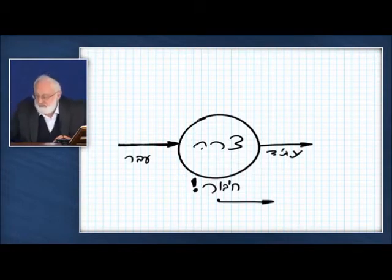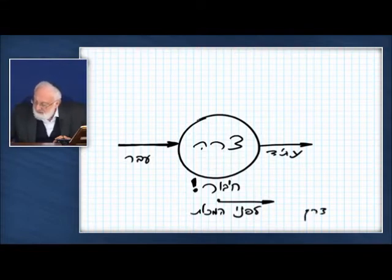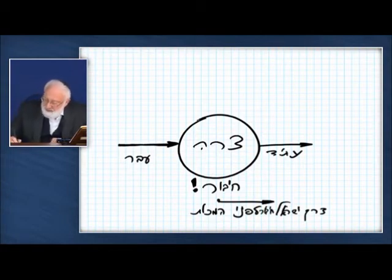That even before the blow comes, connection before the blows. This is called the path of Israel, the way of Israel. So that there will be connection through Israel ahead of the blows.